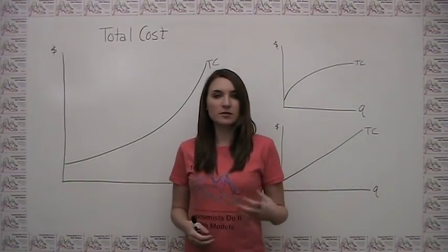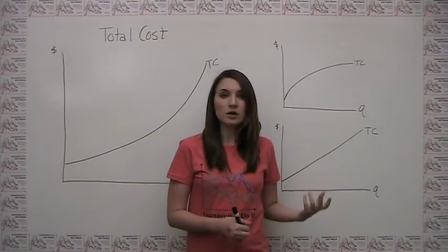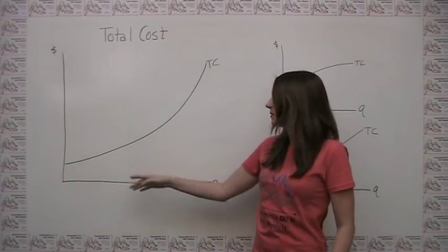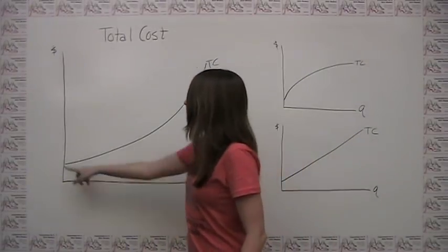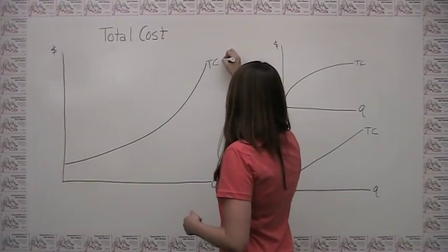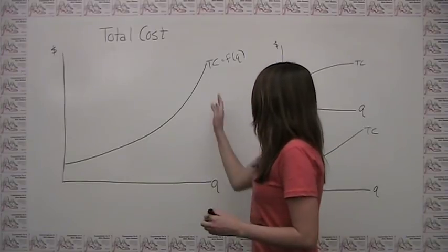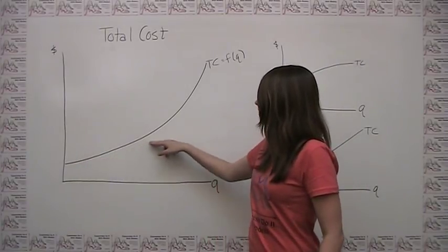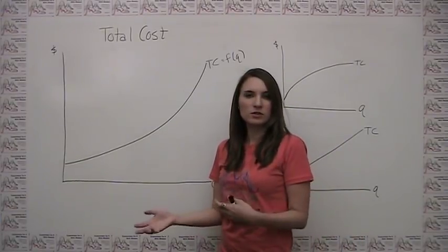Now that we've introduced various measures of cost conceptually, let's think about what they look like when we put them on a graph. Starting with total cost, we're going to be graphing cost with quantity of output on the x-axis and dollars on the y-axis, because total cost is some function of the quantity produced. The most obvious feature is that total cost is always increasing as quantity increases — that just reflects the fact that it costs more to produce more stuff.